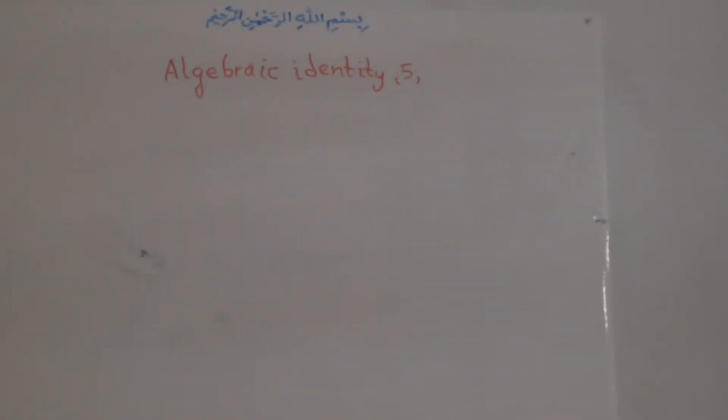Hi, dears. Welcome to math class. Our title is the algebraic identity number 5 and this identity is A plus B times A minus B.